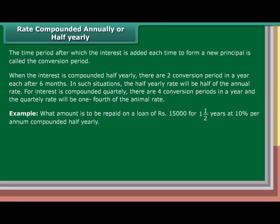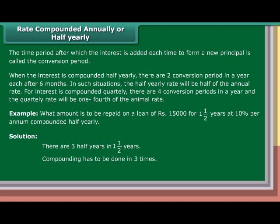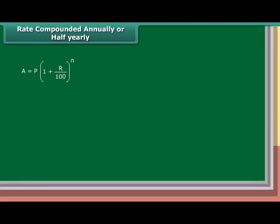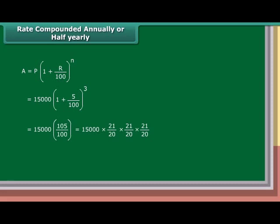Example: What amount is to be repaid on a loan of Rs. 15,000 in one and a half years at 10% per annum compounded half yearly? Solution: There are three half years in one and a half years, so compounding has to be done three times. Rate of interest is equal to half of 10%, which is 5% half yearly. A is equal to P into (1 plus R upon 100) raised to the power N, which is equal to 15,000 into (1 plus 5 upon 100) raised to the power 3, equal to 15,000 into (21 upon 20) into (21 upon 20) into (21 upon 20), which is equal to Rs. 17,364.37.